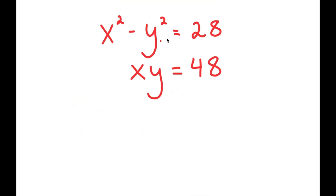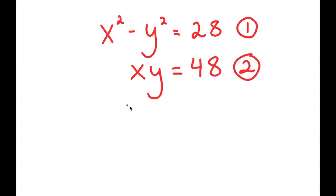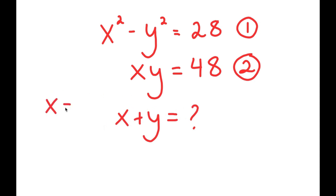Alright, so in this system of equations I have x squared minus y squared is equal to 28, and x times y equals 48. I'm given two equations — let's call this equation 1 and equation 2. What I want to do is find the value of x plus y.